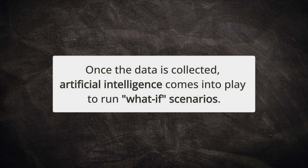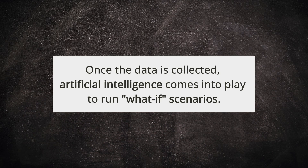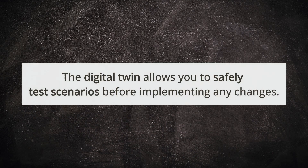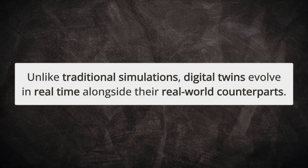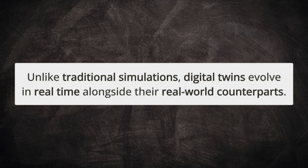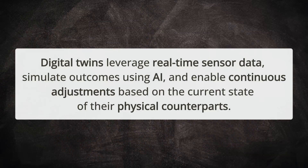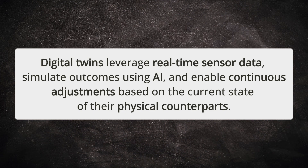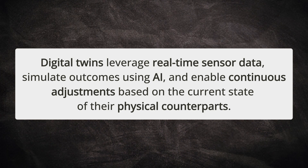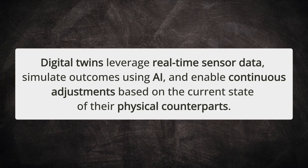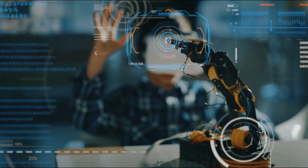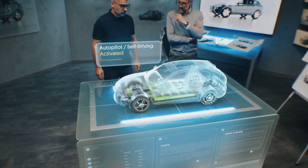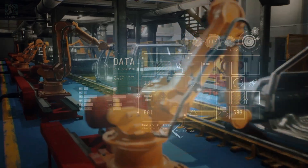Once the data is collected, artificial intelligence steps in to run what-if scenarios. The digital twin allows you to test these scenarios safely before implementing changes. Unlike traditional simulations, digital twins evolve as the real-world system changes. In summary, digital twins leverage real-time data from sensors, simulate various outcomes through AI, and allow for continuous adjustments based on the current state of their physical counterparts — enabling organizations to enhance performance, avoid costly mistakes, and drive innovation.